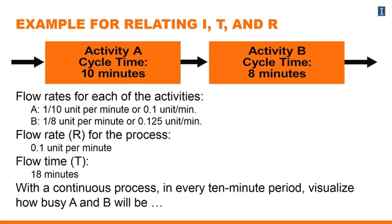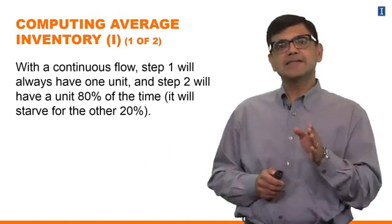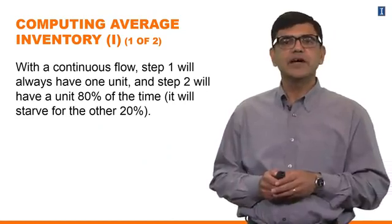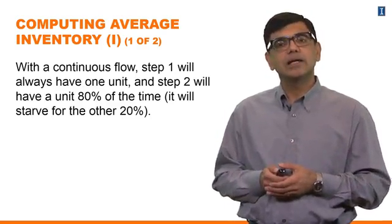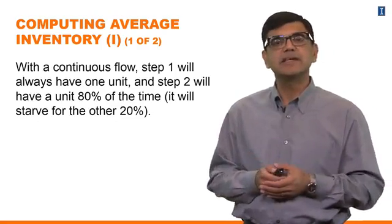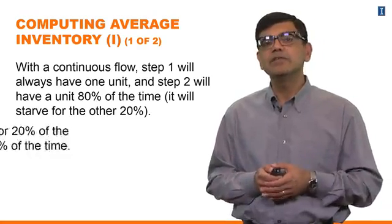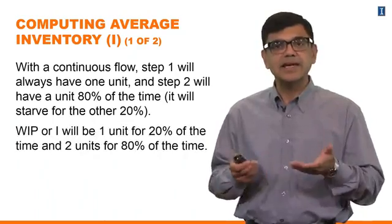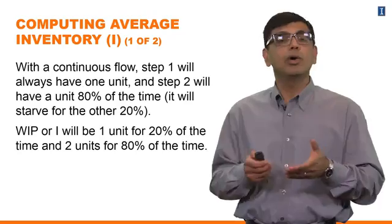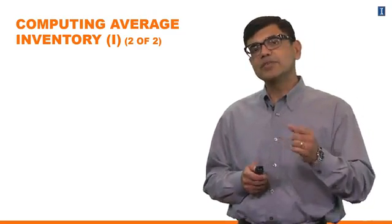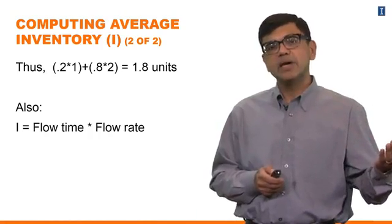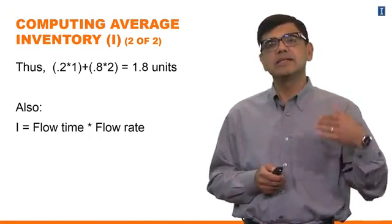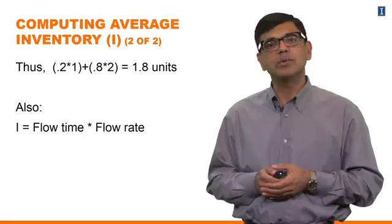With the process running continuously, in every ten-minute period: there are two units in the system 80% of the time — 80% of the time both A and B are busy. And 20% of the time A is busy while B is starving, sitting idle. So if you calculate the average inventory: two units in the system 80% of the time, one unit in the system 20% of the time, that gives you 1.8 units. Inventory in the system is 1.8 units.